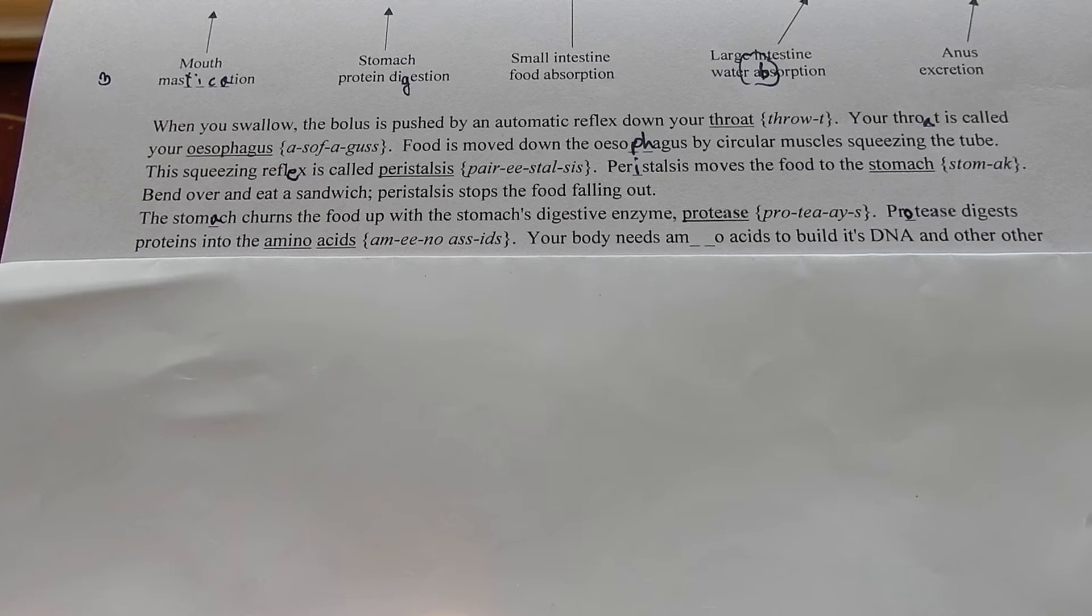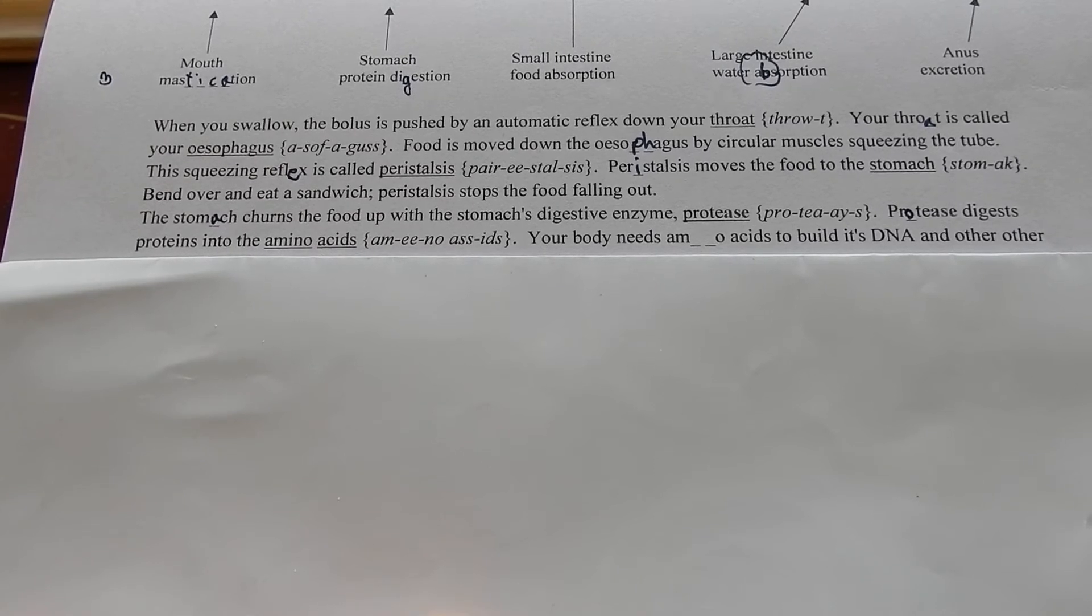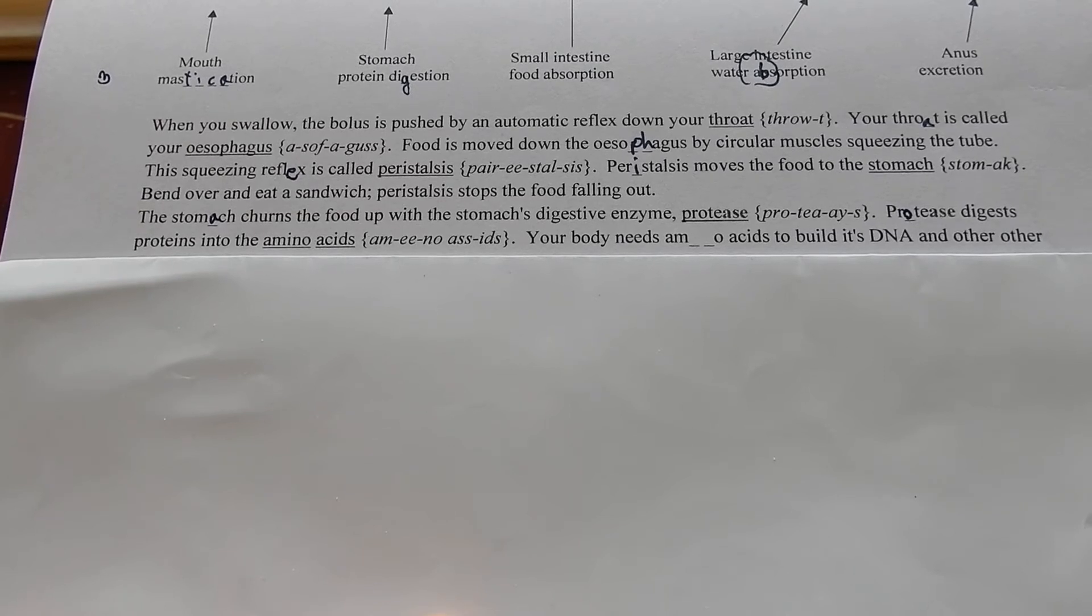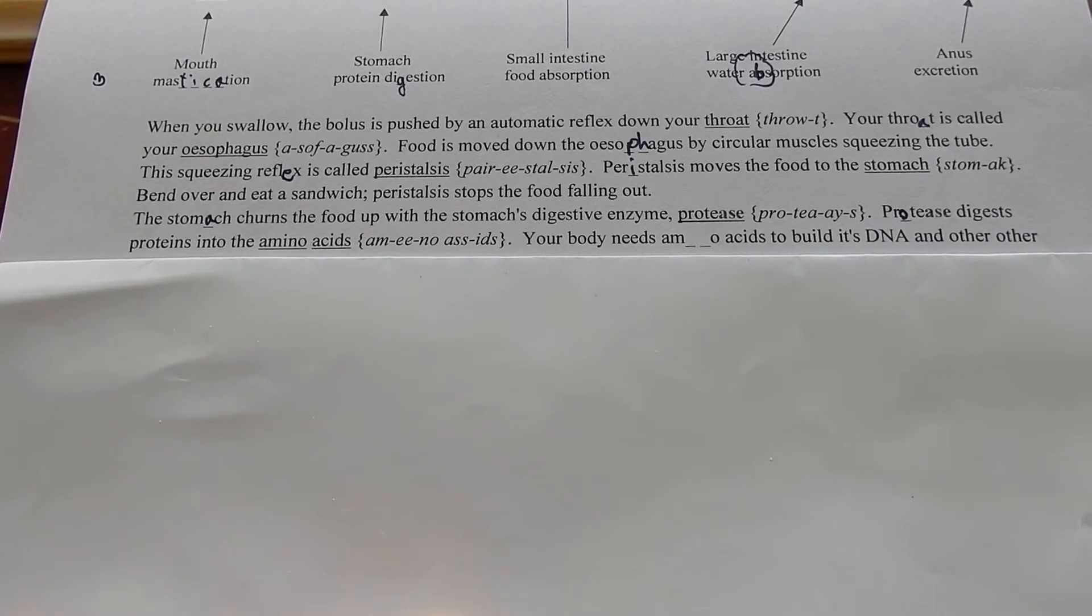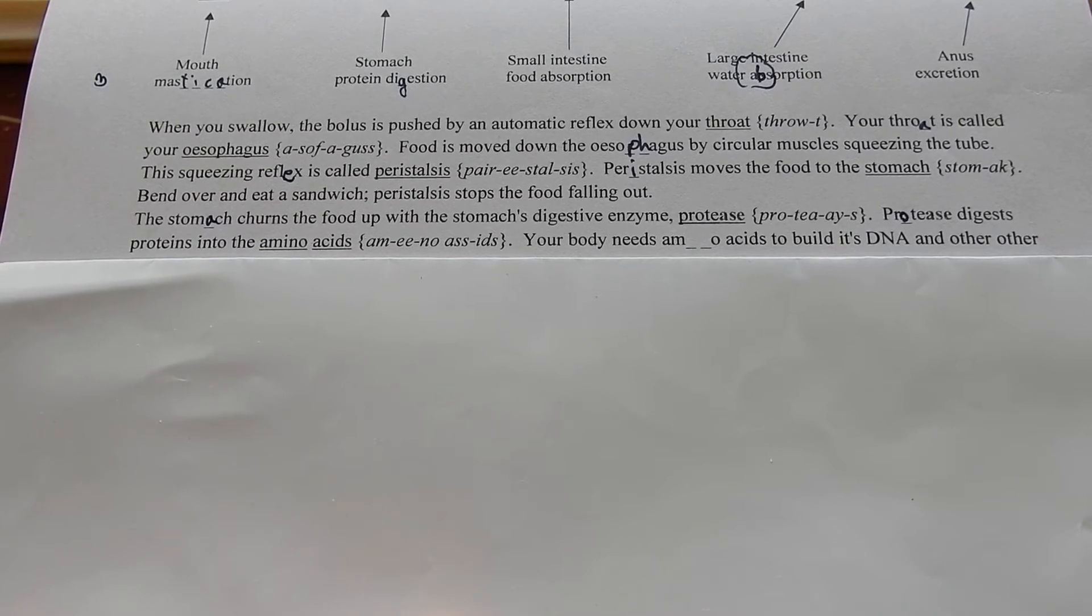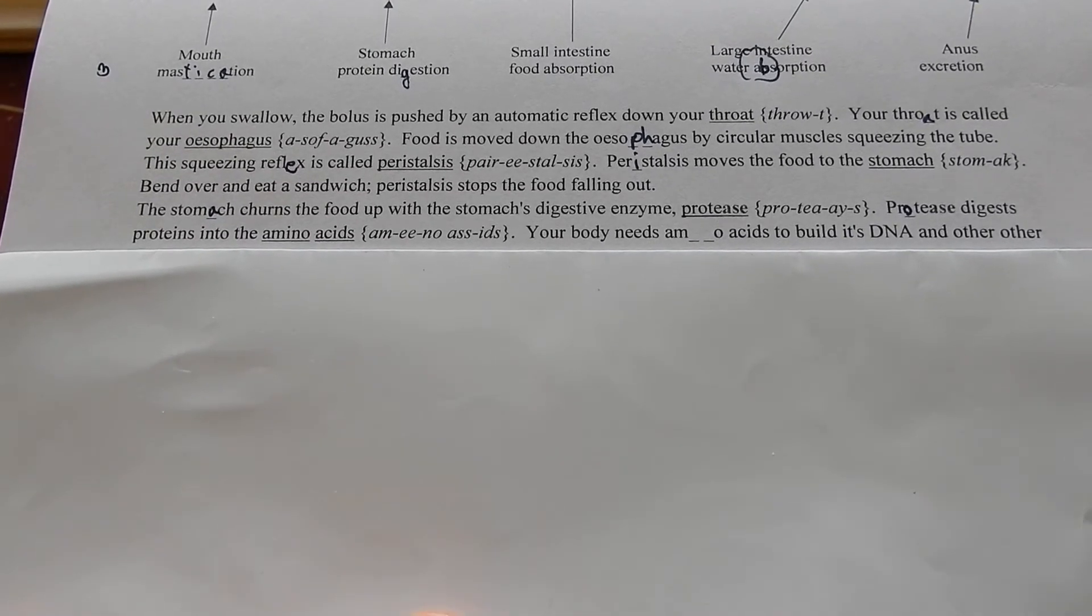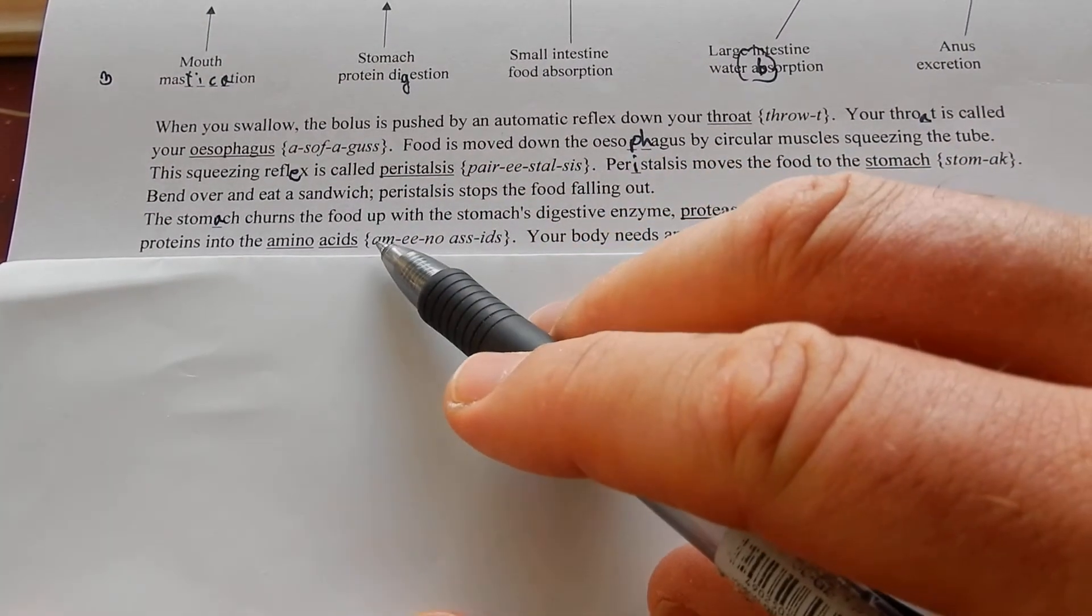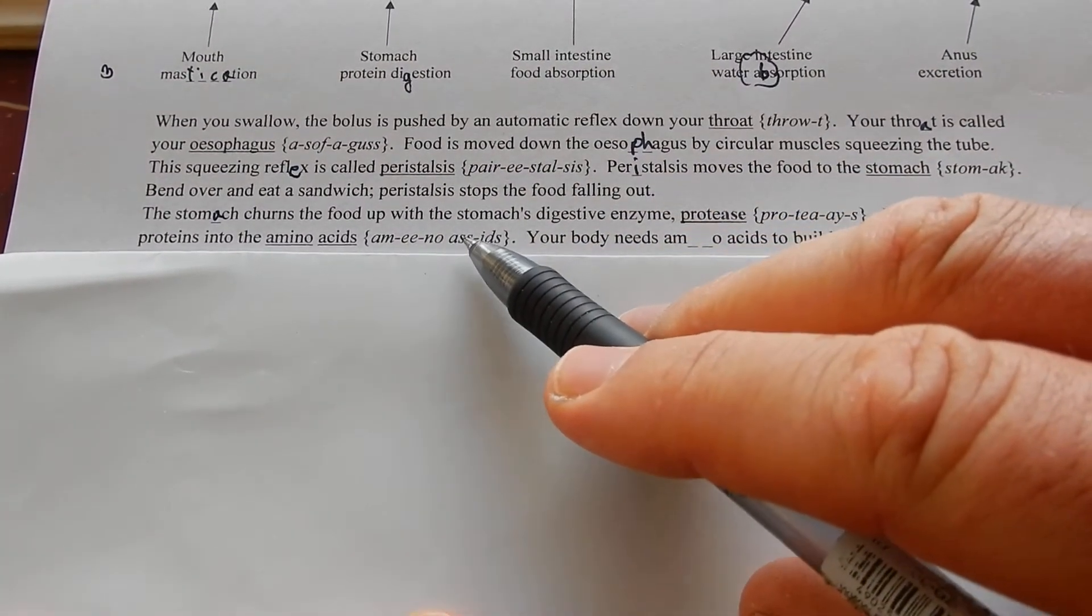Protease digests proteins into amino acids. Proteins can't go around in your blood. They're too big. You can't get it through into the capillaries and out to let your cells grow and let your muscles get larger. So you have to break the proteins down to smaller bits called amino acids.